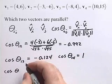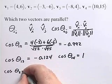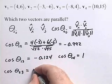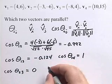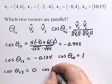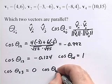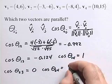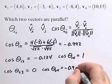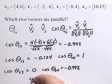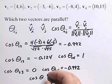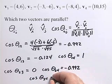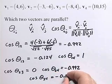The cosine of theta for vectors 2 and 3 turns out to be 0. The cosine of theta for vectors 2 and 4 is negative 0.992. And lastly, the cosine of theta for vectors 3 and 4 is negative 0.124.